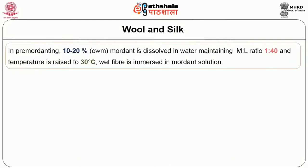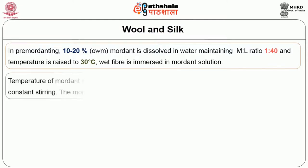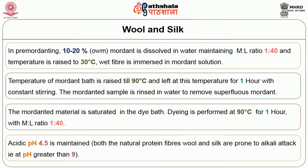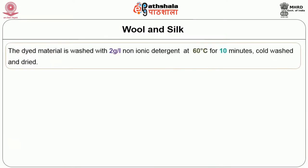In pre-mordanting, 10 to 20% mordant is dissolved in water maintaining a material liquor ratio of 1 to 40 and temperature is raised to 30 degrees centigrade. Wet fibre is immersed in the mordant solution. Temperature of the mordant bath is raised to 90 degrees centigrade and left at this temperature for 1 hour with constant stirring. The mordanted sample is rinsed in water to remove superfluous mordant. The mordanted material is then saturated in the dye bath, and dyeing is performed at 90 degrees centigrade for 1 hour with material liquor ratio 1 to 40. Acidic pH of 4.5 is maintained. The dyed material is washed with 2 g/L non-ionic detergent at 60 degrees centigrade for 10 minutes, cold washed and dried.